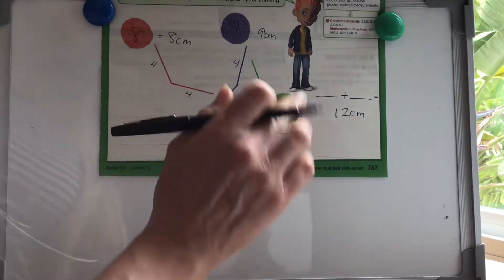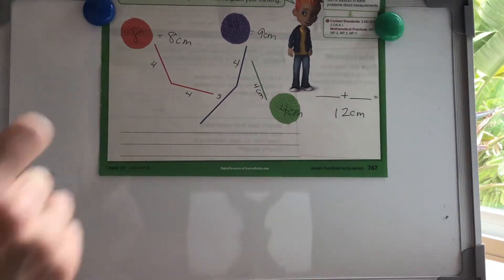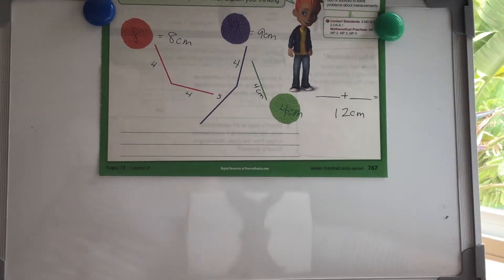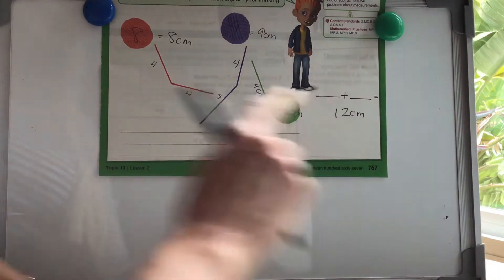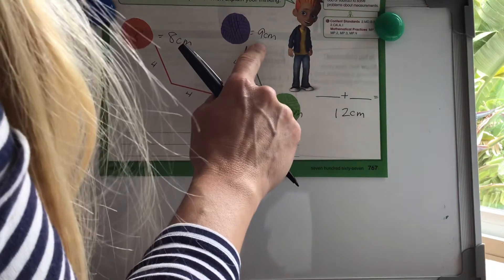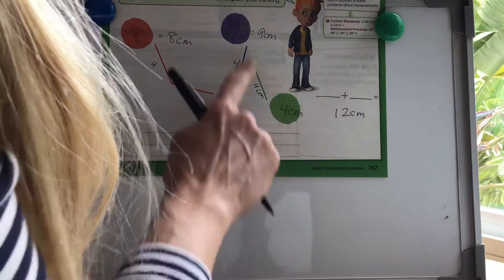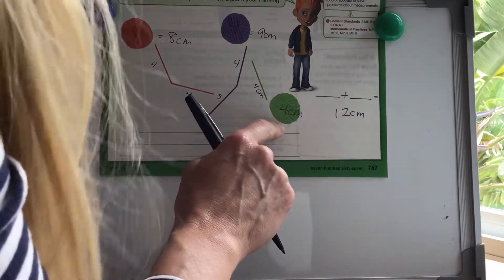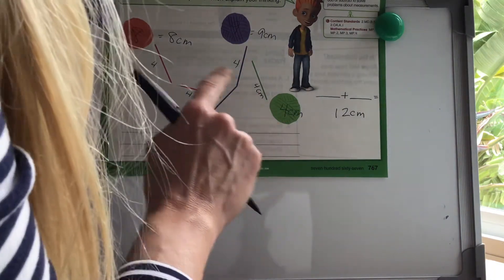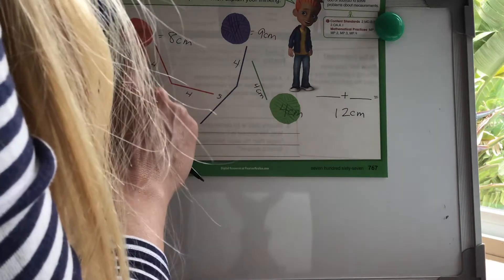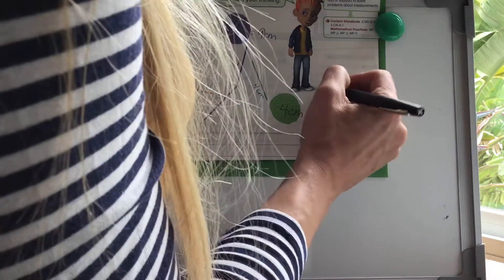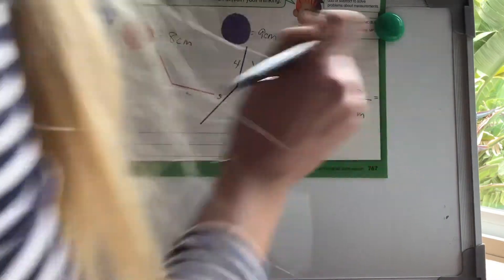So we need to figure out what two numbers that we can add together to equal 12. Let's take a look at what we have here. Eight plus nine equals 17. So that doesn't work. Let's see. Nine plus four is 13. So let's keep trying here. Four plus eight. Oh yeah, four plus eight works. Four plus eight is 12.